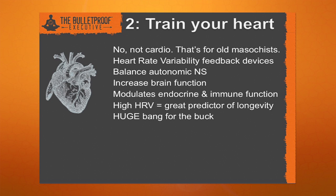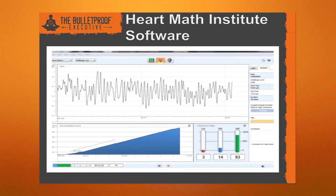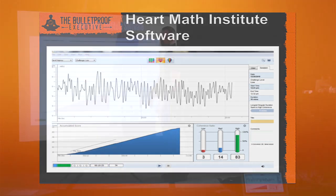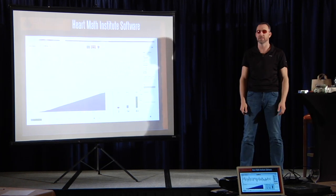It also increases your brain function. 80% of the nerves between your heart and your brain run from your heart to your brain. Your heart is a seat of emotion and it is part of your nervous system. It turns out heart rate variability will modulate your endocrine function, your hormones and your immune function.